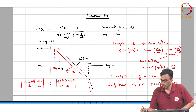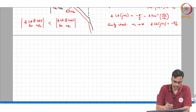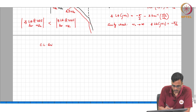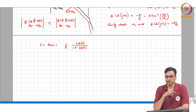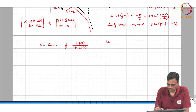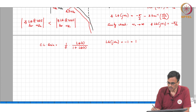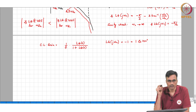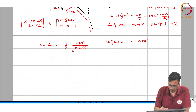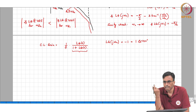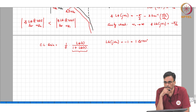The closed-loop gain is 1/(f) times loop-gain(s) divided by (1 + loop-gain(s)). If the loop gain at j-omega-u becomes minus 1 — which is magnitude 1 at a phase of minus 180 degrees — then 1 plus loop-gain simply becomes 0, and the closed-loop gain becomes infinite, which basically means the system is unstable.